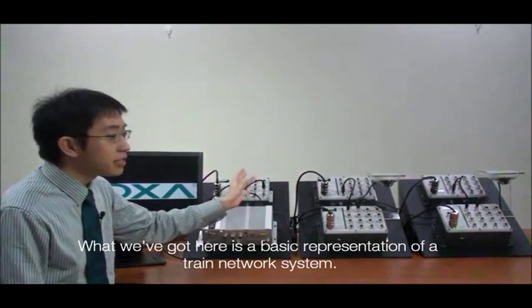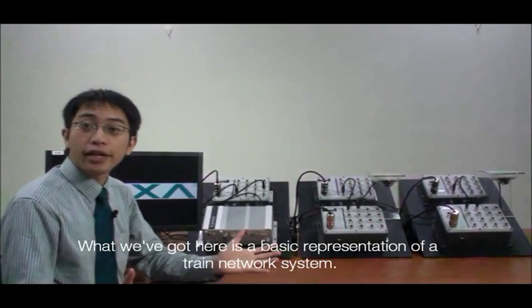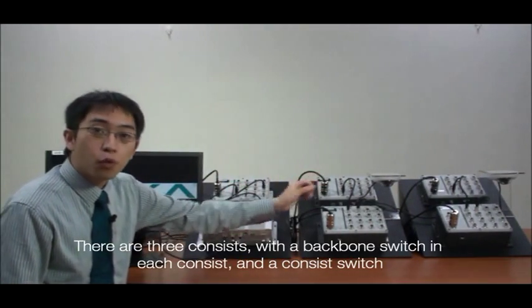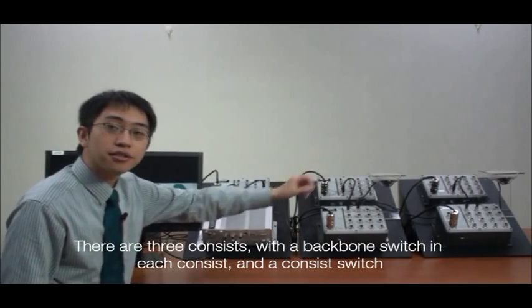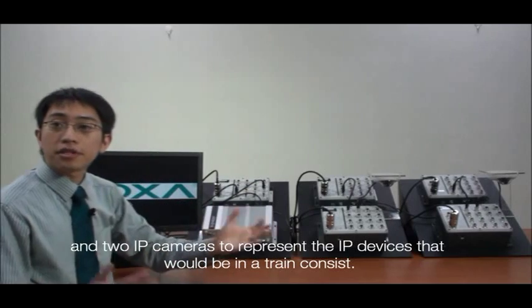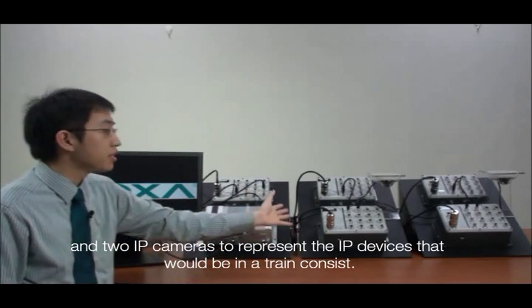What we've got here is a really basic representation of your train network system. There are three consists with a backbone switch in each consist and a consist switch and two IP cameras to represent the IP devices that would be in a train consist.